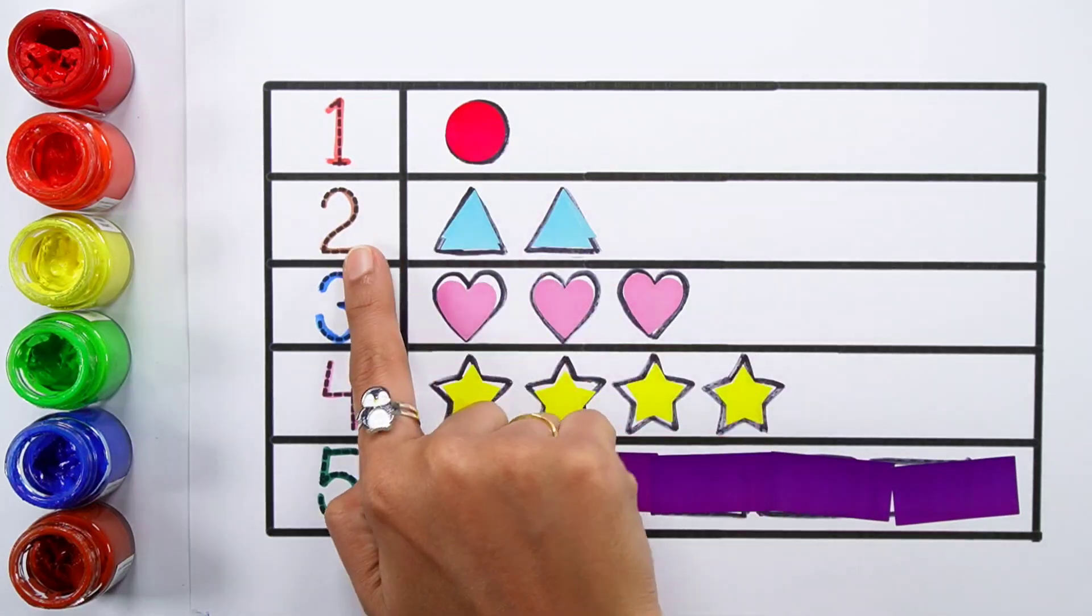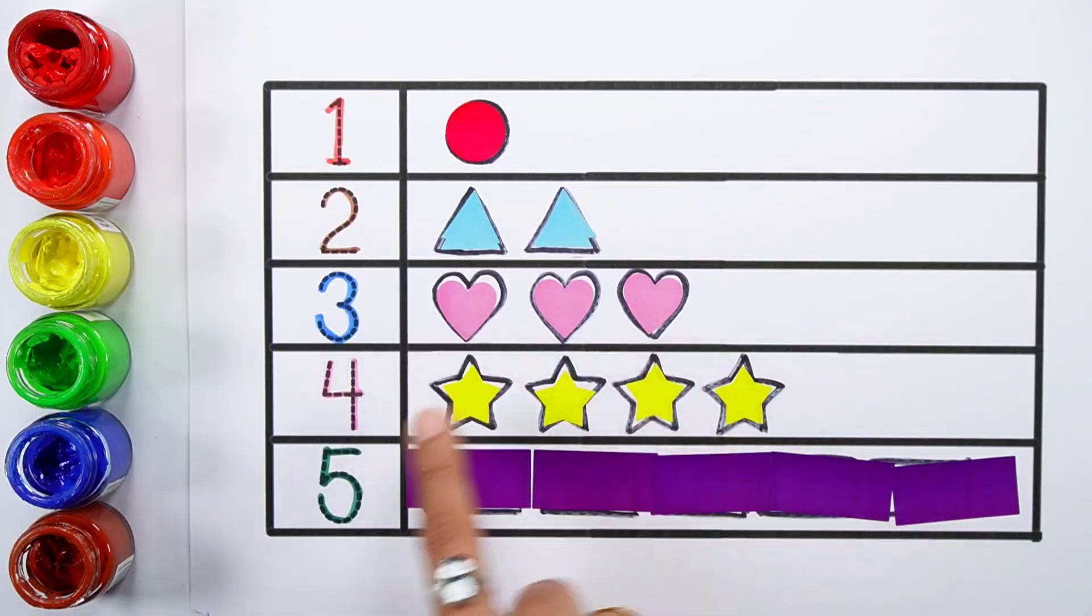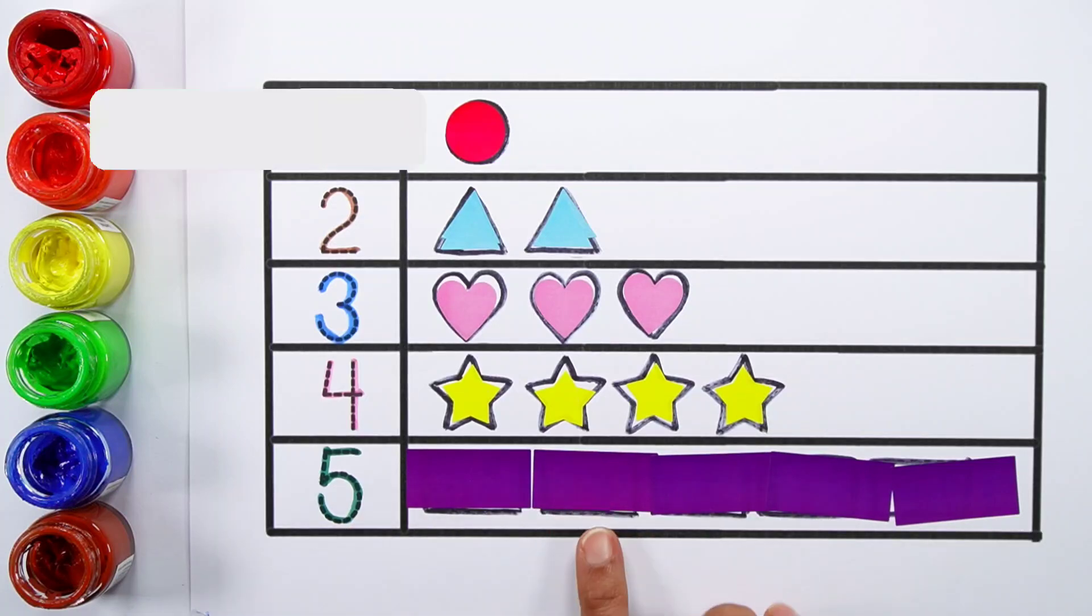One, one circle. Two, one, two, two triangles. Three, one, two, three, three hearts. Four, one, two, three, four, four stars. Five, one, two, three, four, five, five rectangles.